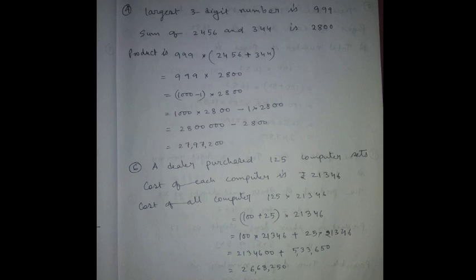Now multiplication of the product is 999 into 2800. So 999 we can write as 1000 minus 1 into 2800, which is 1000 into 2800 minus 1 into 2800. So 28 lakh minus 2800 equals 27 lakh 97,200. Number 6.